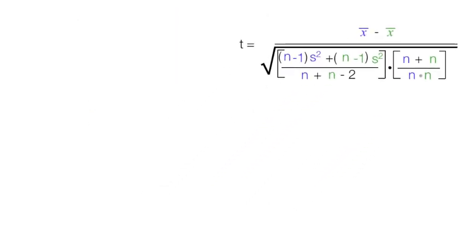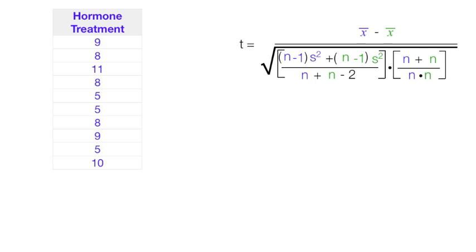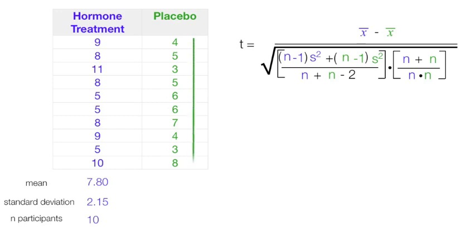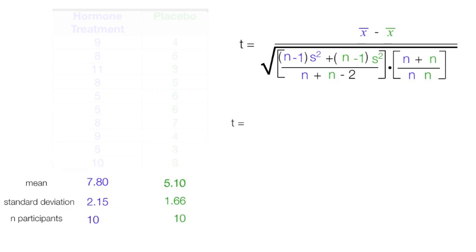Now I have a hormone treatment I'm going to give to rats, and I also have a placebo to give to the other rats. I'll calculate the mean, the standard deviation, and I know the number of participants. For the hormone group: mean is 7.8, standard deviation is 2.15, and there are 10 participants. For the placebo group: mean is 5.10, standard deviation is 1.66, and there are 10 participants. I'm going to plug and chug — there are a lot of steps, and I'll do them one at a time.